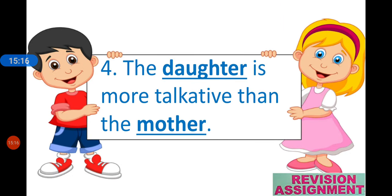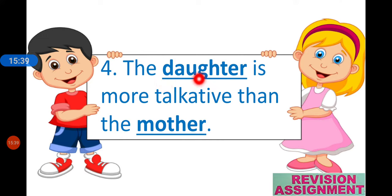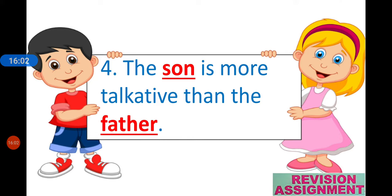Next: 'The daughter is more talkative than the mother.' Write the opposite gender of daughter — a three-letter word — and of mother, a very commonly used word. The opposite gender of daughter is son. So the answer is: 'The son is more talkative than the father.'